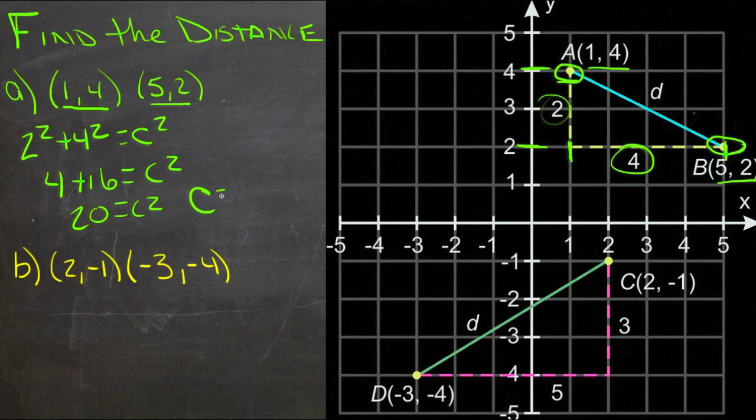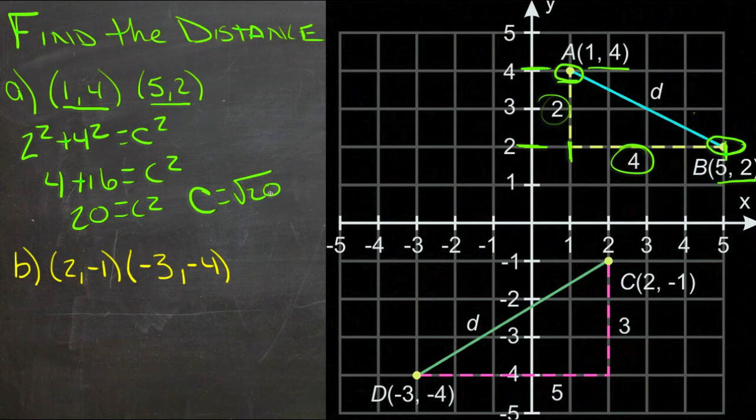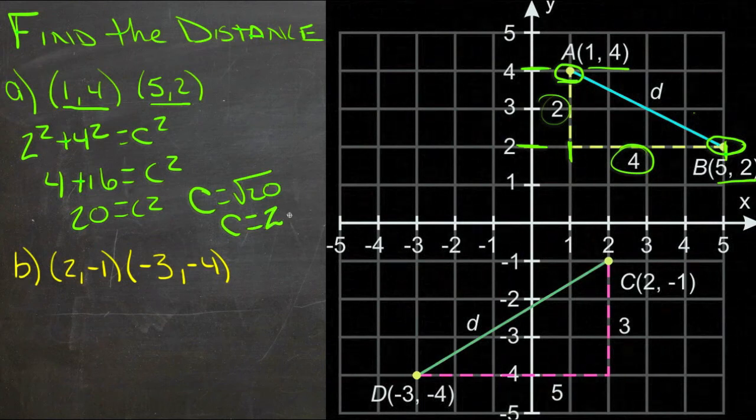And c equals the square root of 20. We can simplify that just a little bit more. 20 is the same as 5 times 4. And we know the square root of 5. So we could say c equals, or square root of 4, sorry.